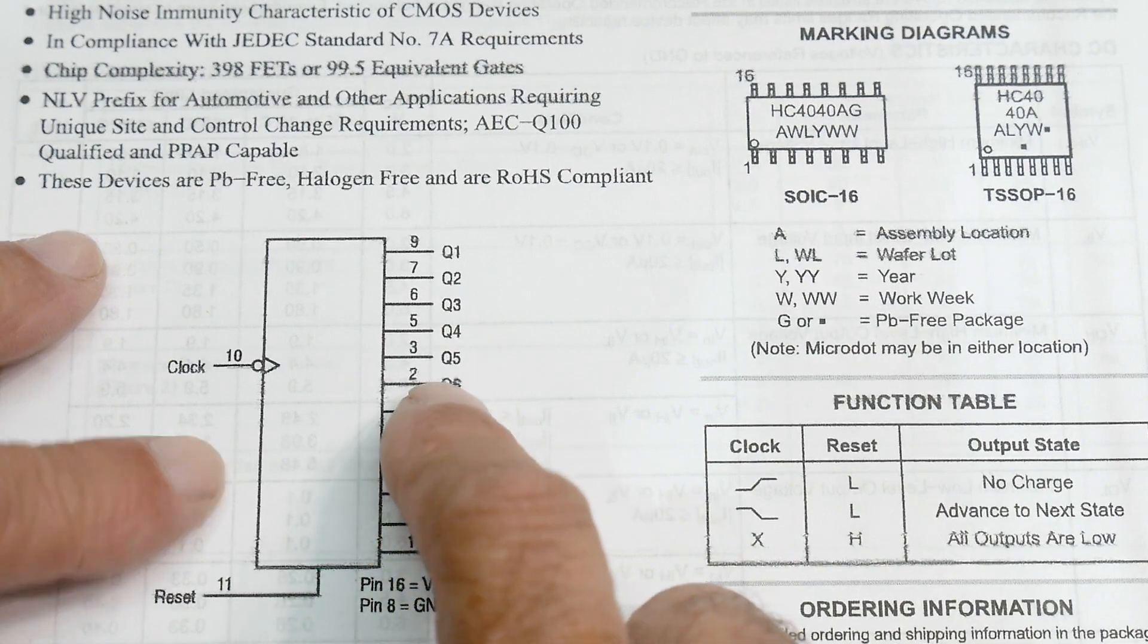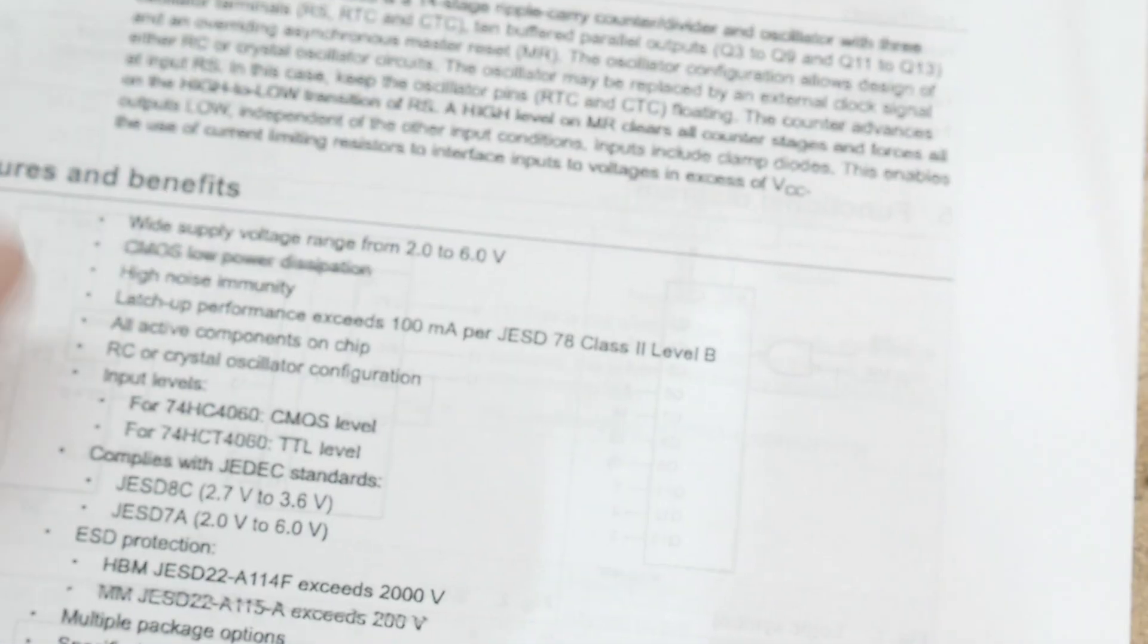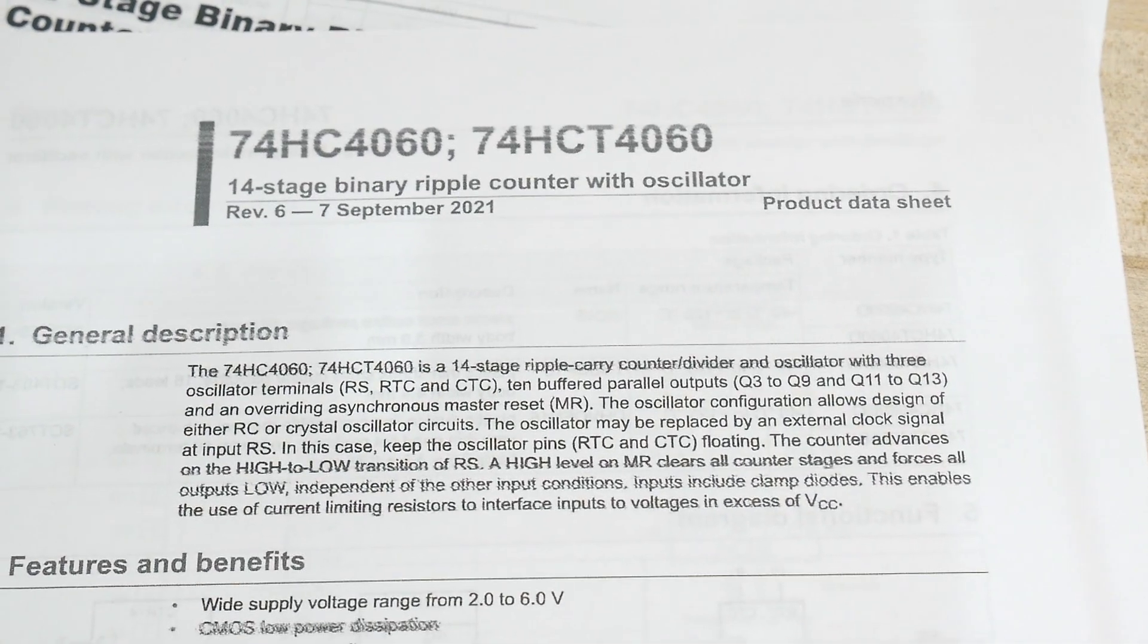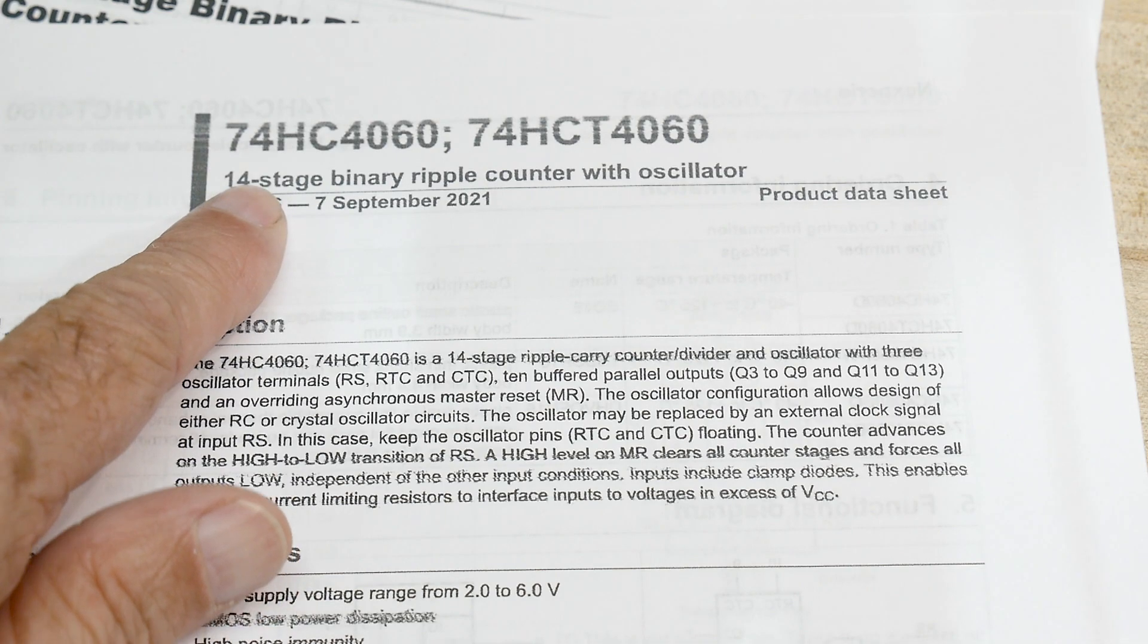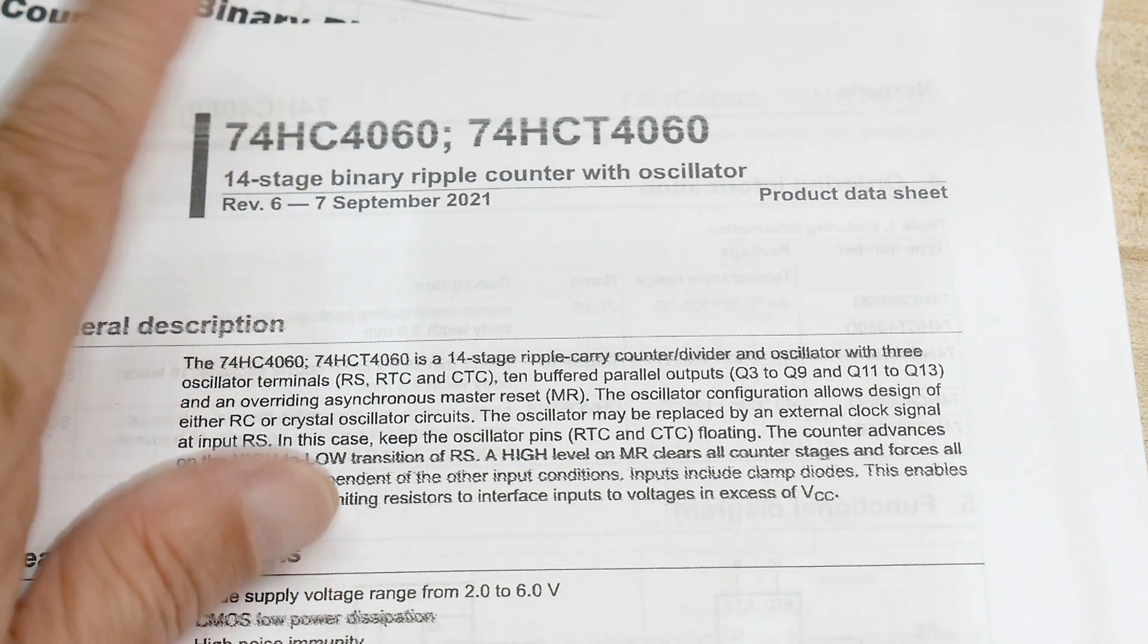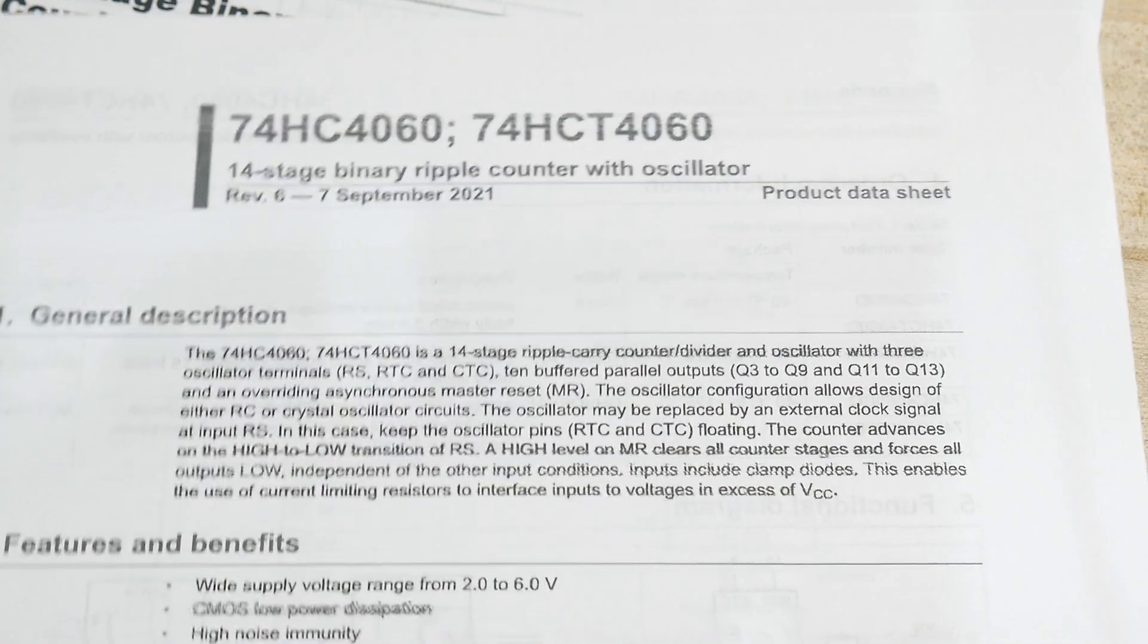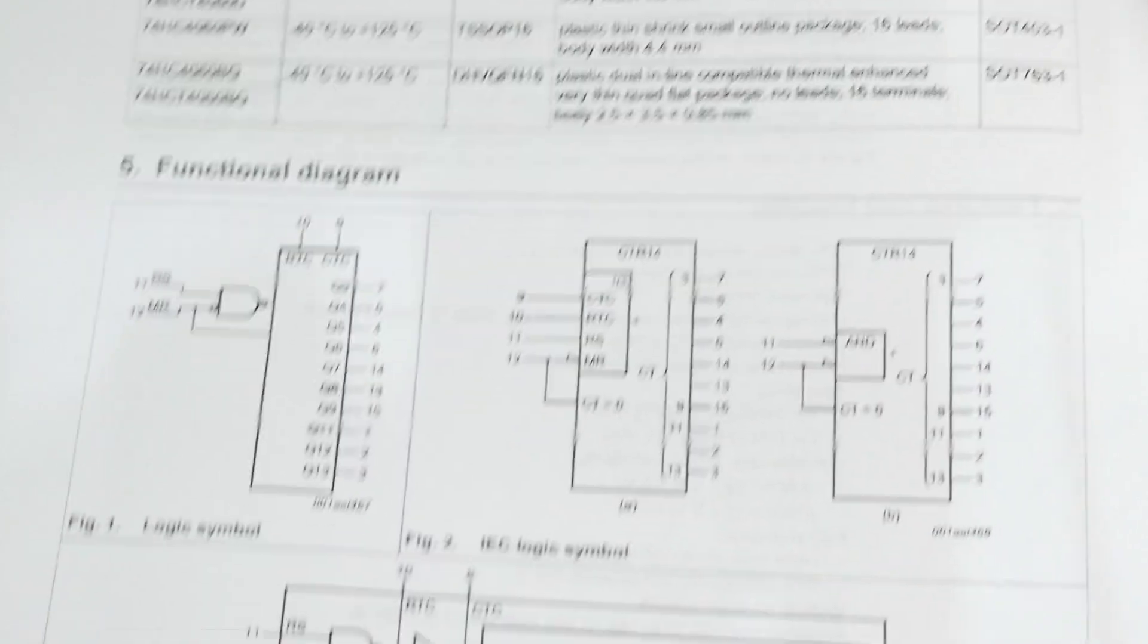If you're going to talk about the HC4040, then you have to talk about another chip - the 4060. Now the 4060, I don't find as useful. It is 14 bits instead of only 12 bits, so if you need a couple extra bits it is good for that, but it comes at a cost. The cost is that all of those bits are not output.